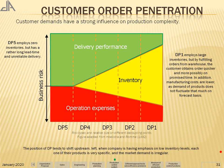The position of the decoupling point tends to shift upstream when companies emphasize low inventory levels, especially when each product is very specific and market demand is irregular.